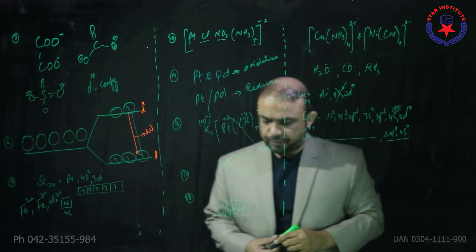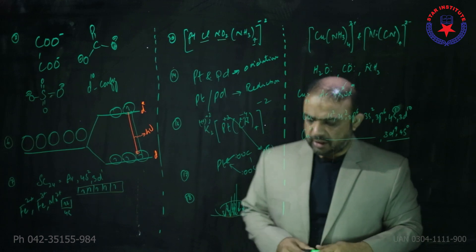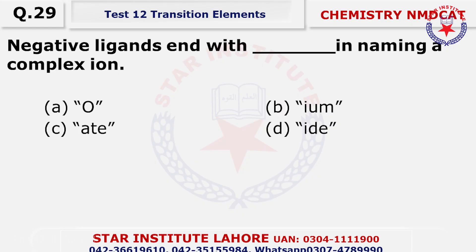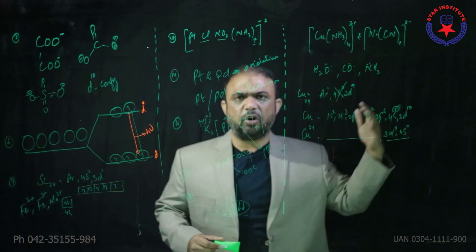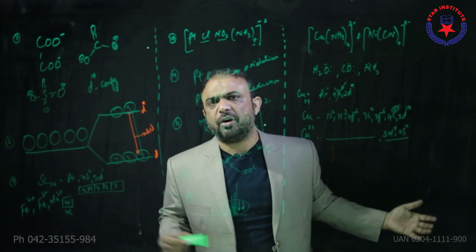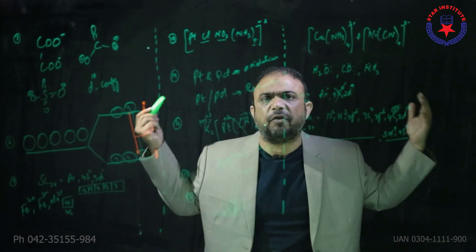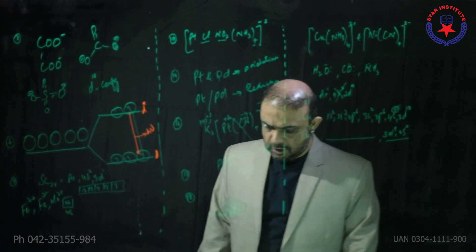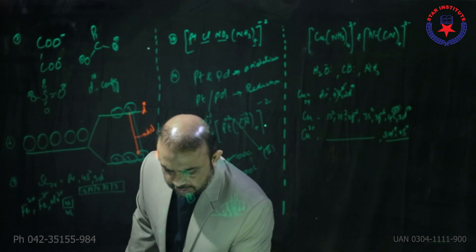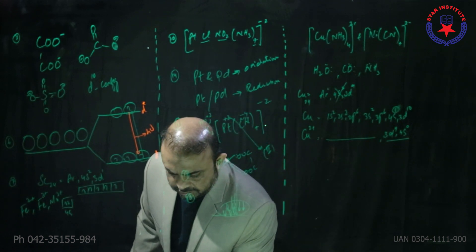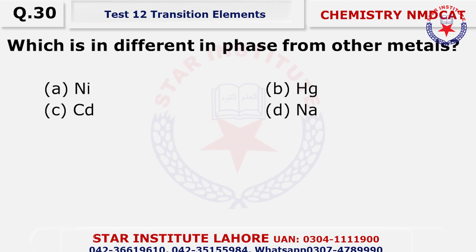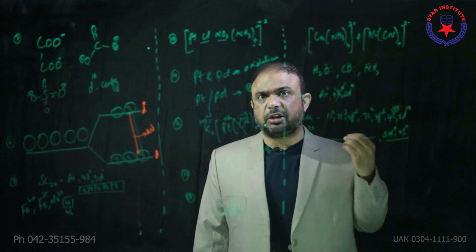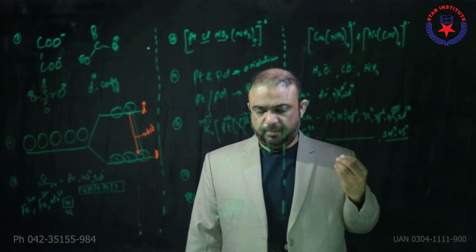Negative ligands are named with the suffix -o: chloro, fluoro, bromo, cyano, iodo, sulfato, oxalato, phosphato. Question thirty: which is in a different phase from the others? Mercury is the only transition metal which is a liquid.